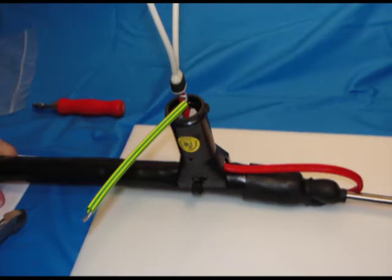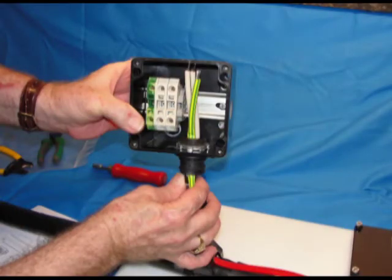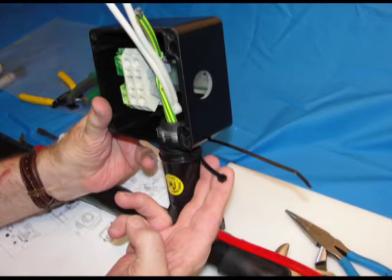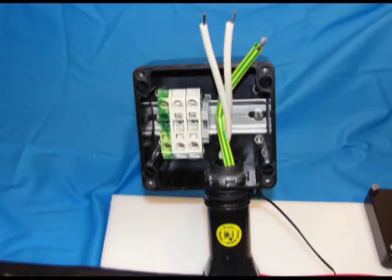Now we are ready to install the junction box onto the completed stand. Insert the wires through the box opening. Screw box onto stand until it stops. Do not over tighten. Insert cable tie through slots on stand and box and tighten firmly to prevent box rotation.